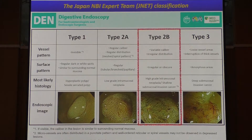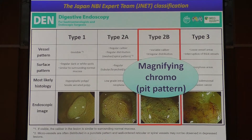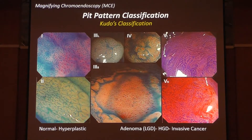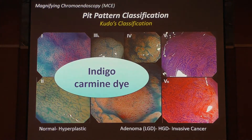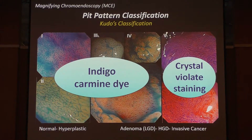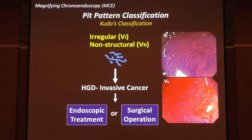To summarize: if you see JNET type 2B, you need further evaluation using magnified endoscopy. This slide summarizes the pit pattern classification from pit pattern 1 to pit pattern 5. From pit pattern 1 to 3L, 3S, and 4, indigo carmine dye is enough for chromoendoscopy. However, for important diagnosis of pit pattern 5, you need crystal violet stain. Pit pattern 5 is important because it indicates high-grade dysplasia or invasive cancer, and deep SM submucosal cancer is important because it requires surgery due to lymph node metastasis risk.